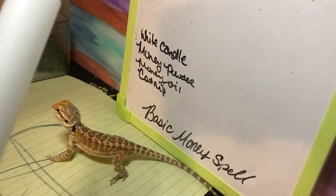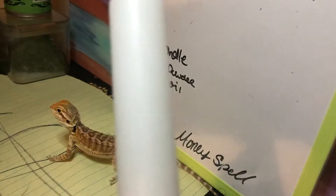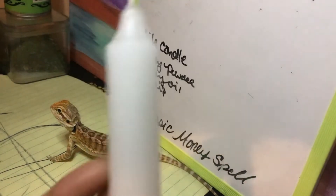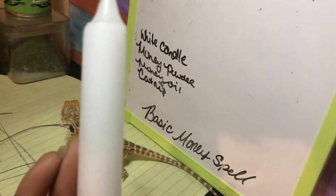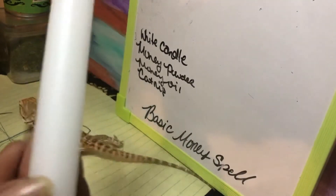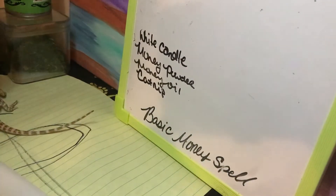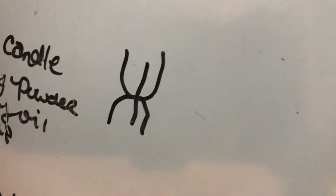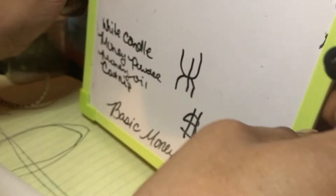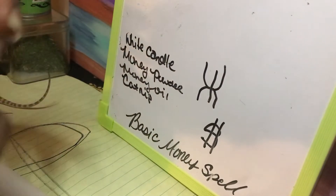With your candle, unused, the first thing you're going to do is carve in the wealth symbol — or the dollar sign — or you can do both into the candle. The wealth sigil or rune, whichever you like to call it. And then everybody knows the dollar sign.